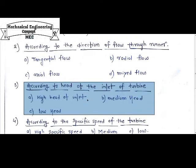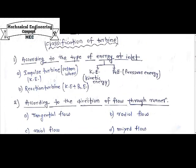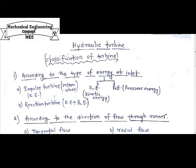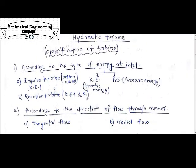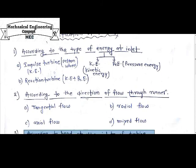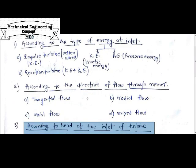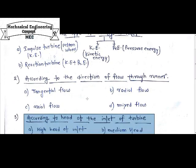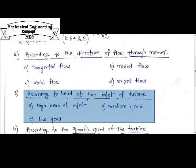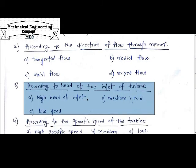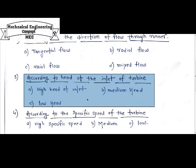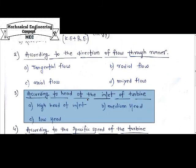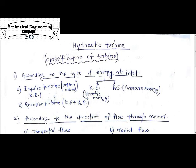So this is the basic categorization of the hydraulic turbine on the basis of: energy at inlet, flow direction through the runner, head at inlet, and the specific speed of the turbine. I hope you liked this video.